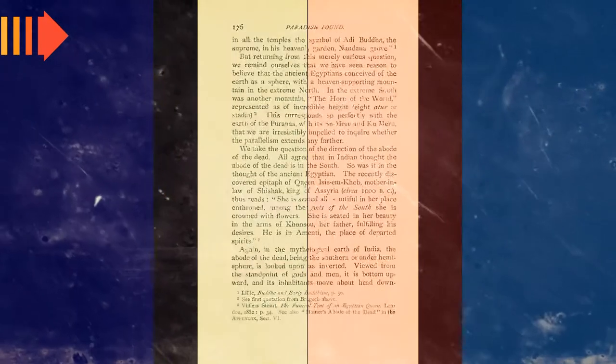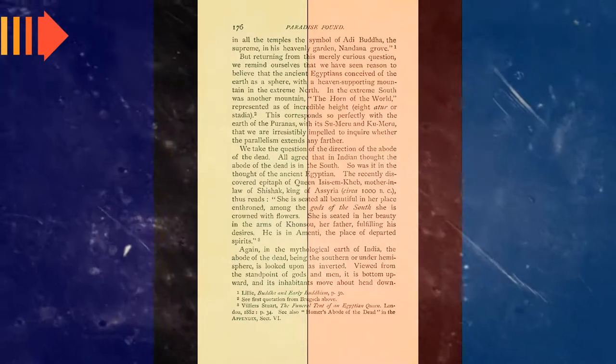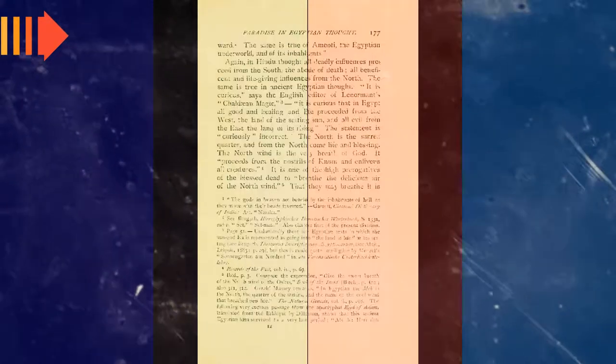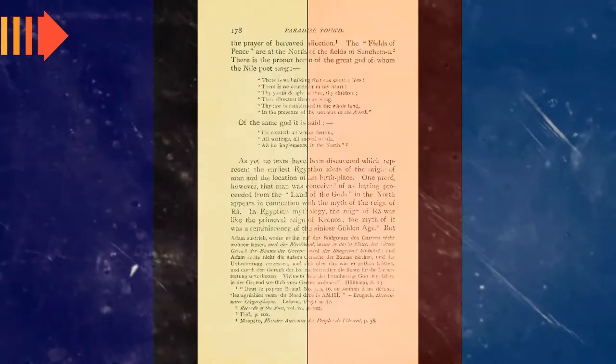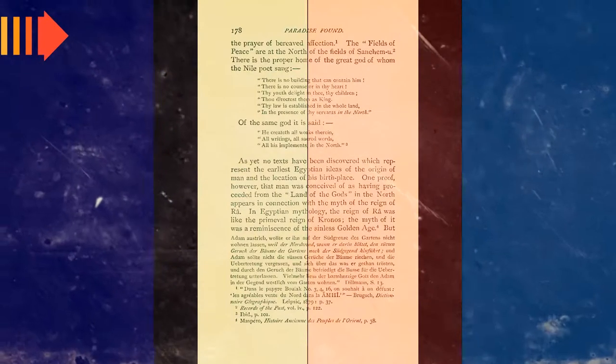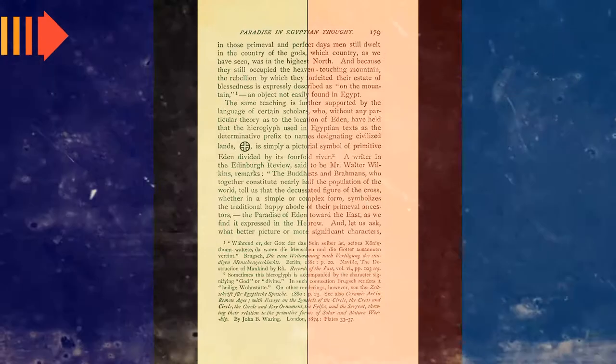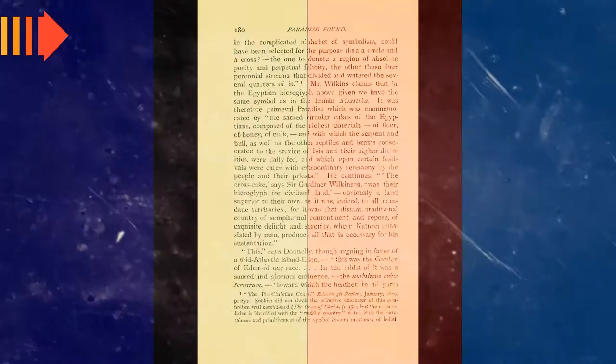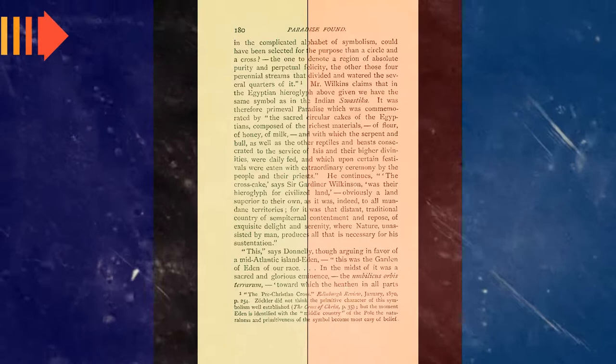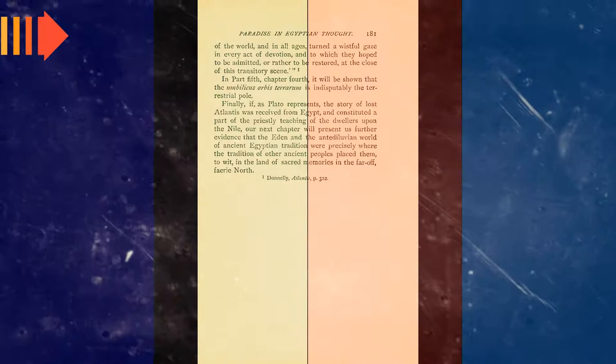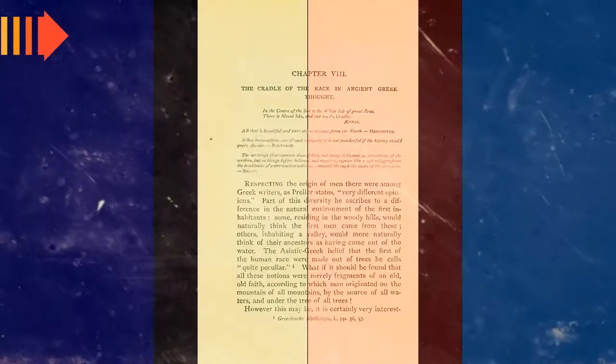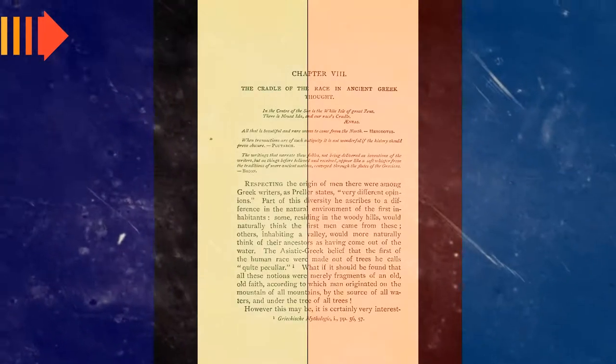Proclus wrote, as for the whole of this account of the Atlanteans, some say that it is unadorned history, such as Crantor, the first commentator on Plato. Crantor also says that Plato's contemporaries used to criticize him jokingly for not being the inventor of his republic but copying the institutions of the Egyptians. Plato took these critics seriously enough to assign to the Egyptians this story about the Athenians and Atlanteans, so as to make them say that the Athenians really once lived according to that system.